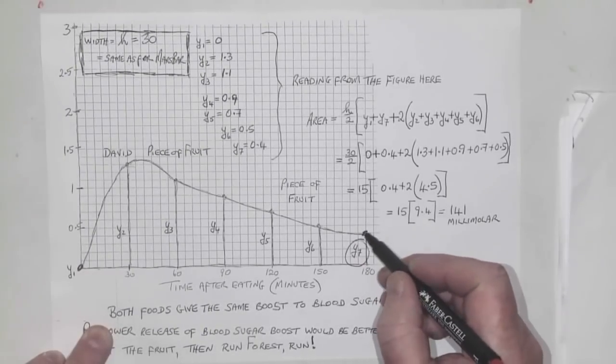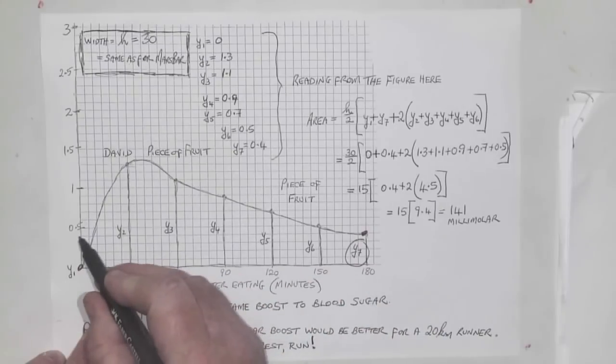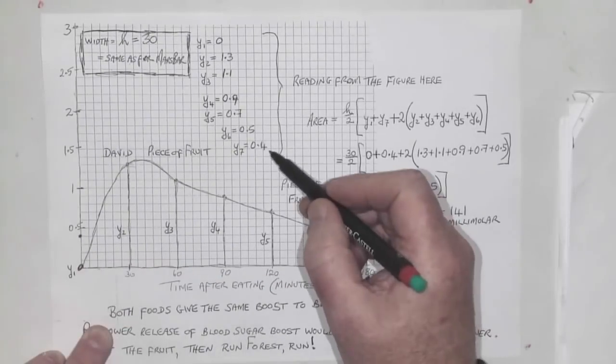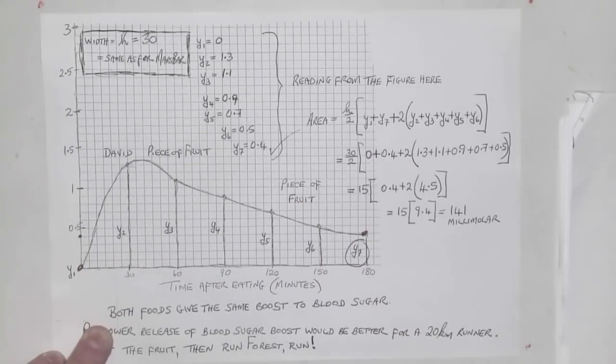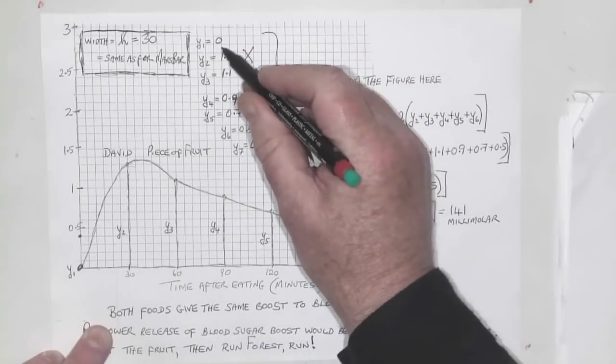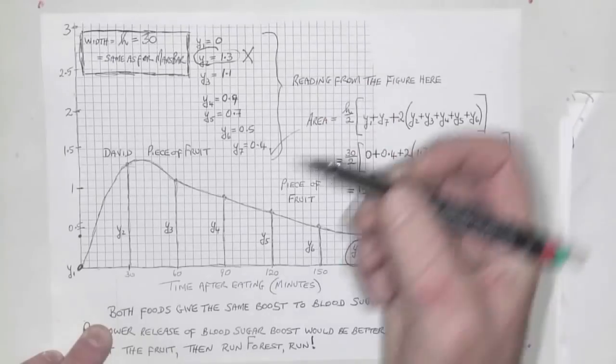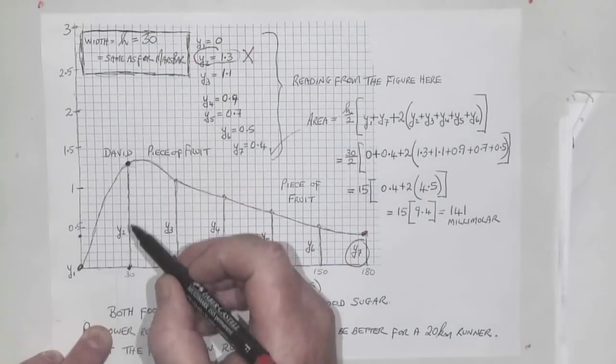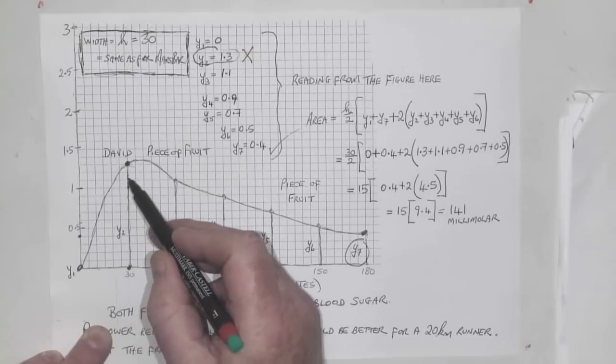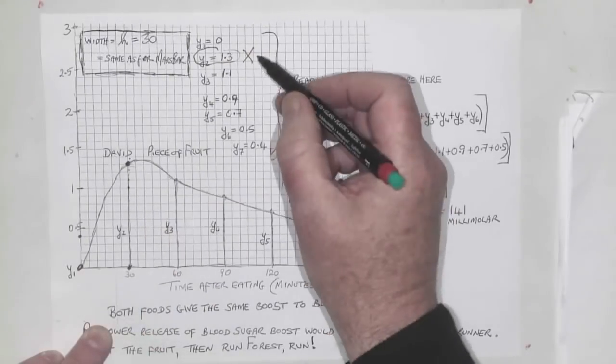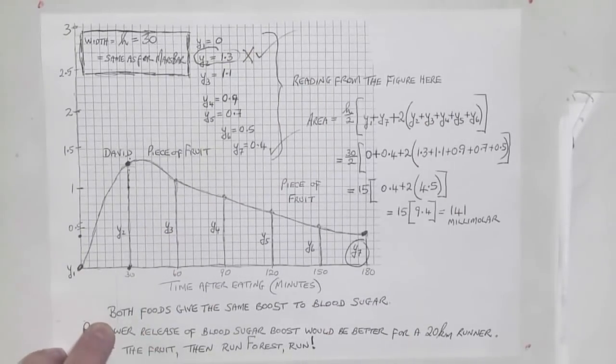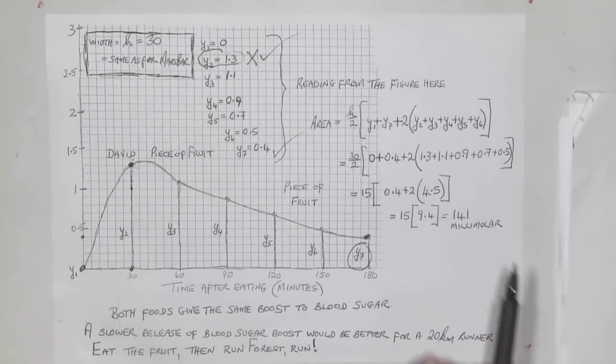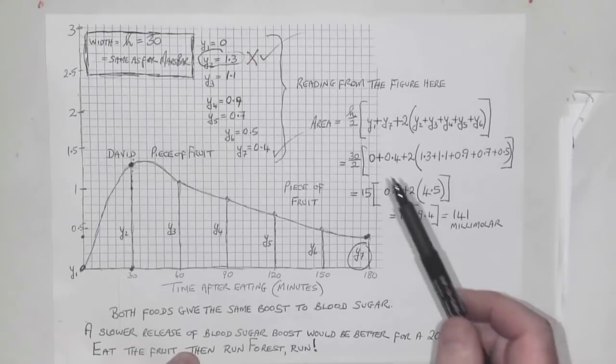I read off the other values. For y2, go all the way up to where you hit the graph. What height is that? There's 1, 1.1, 1.2, 1.3—yes, I have my readings done. It looks a little intimidating, but once I've got that done, it's fairly simple.